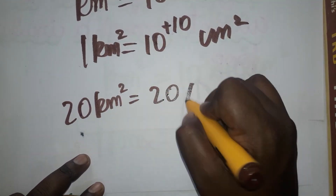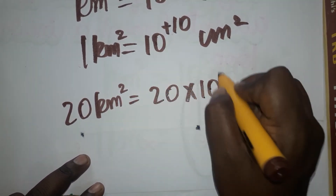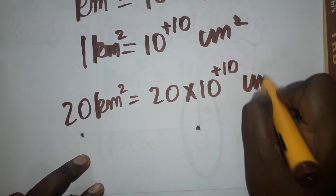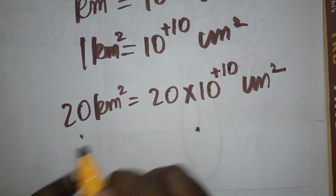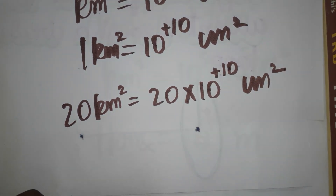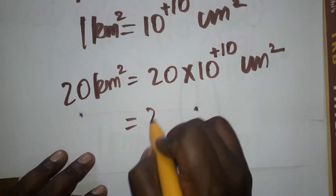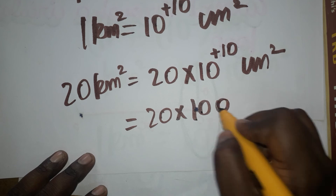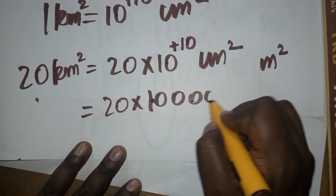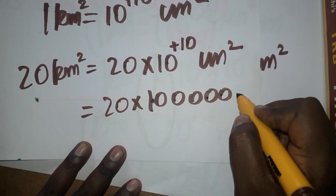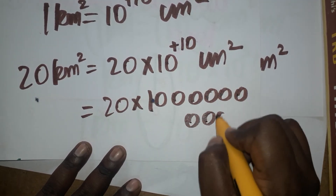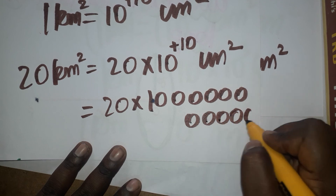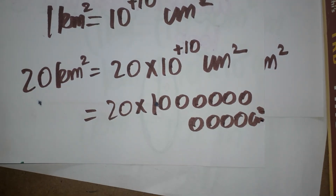For example, if we have 20 kilometer square, then it equals 20 into 10 power 10 centimeter square. We can write 20 followed by 10 zeros centimeter square.